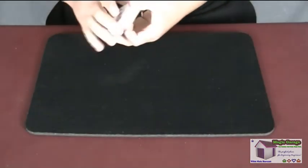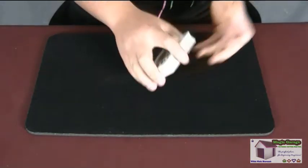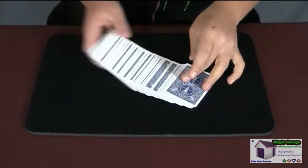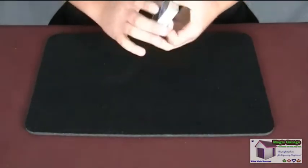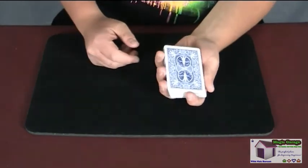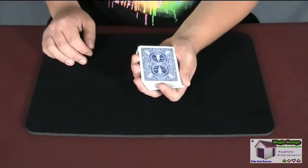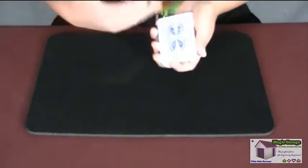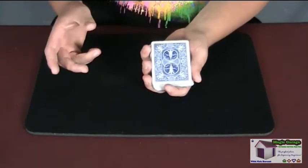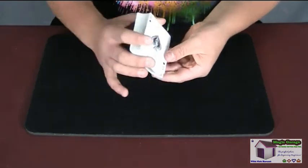Alright guys so now you've seen the performance of the world's fastest card trick, let me show you how to perform it. Now as I mentioned earlier in the video, there is one sleight you are going to need for this effect and it's actually called a reversal move. I think it's like a Brownie or a Browie reversal move or something but I like to just call it the reversal move. And the way it works is like this.